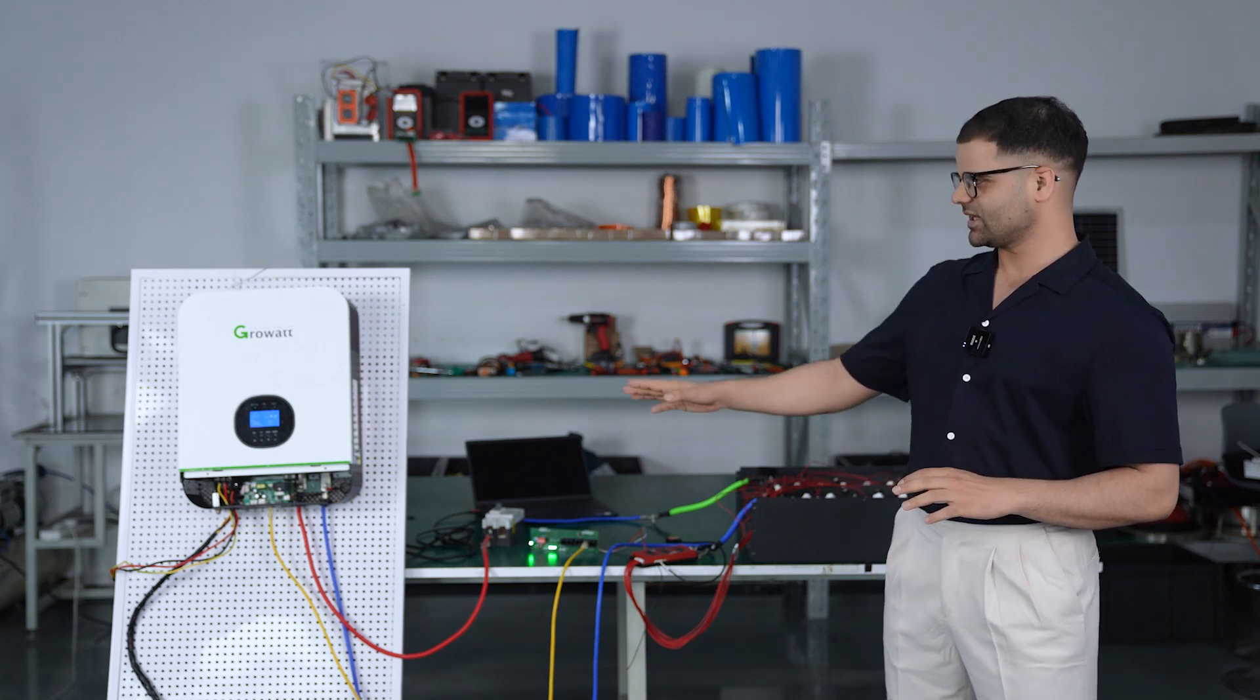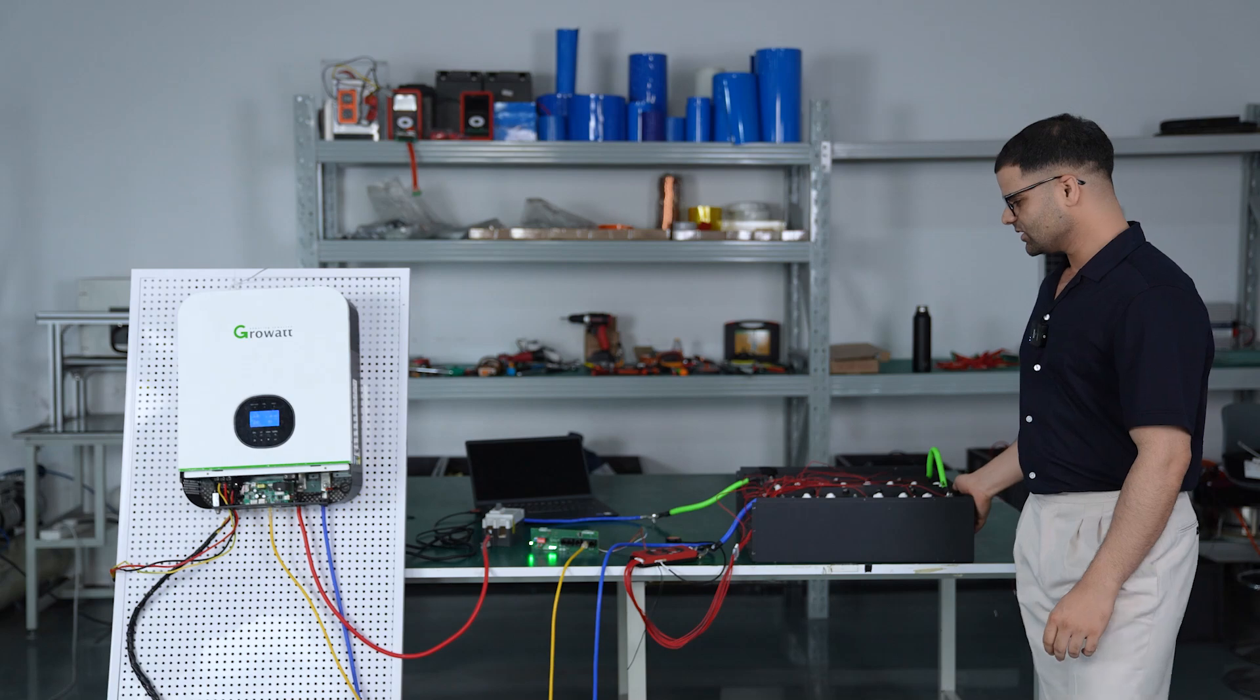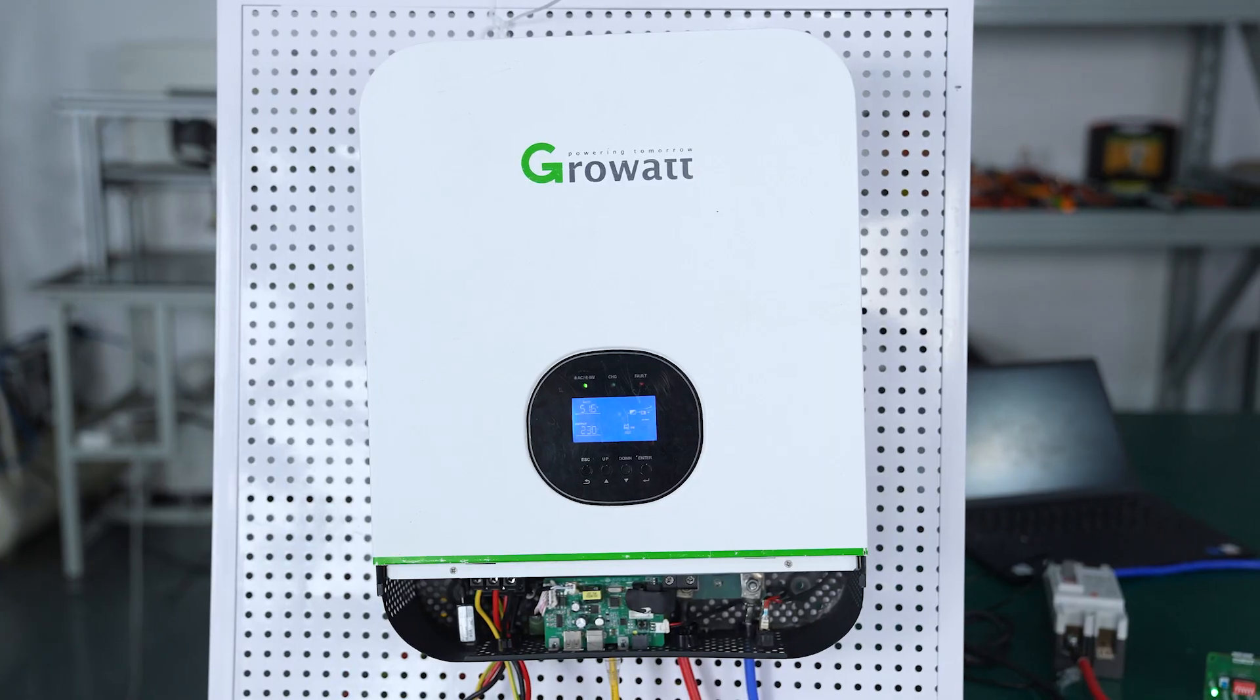Hello, today we are going to talk about how to connect the Growatt inverter. We have a 16S 48-volt battery connected to our 150-amp BMS and a Growatt inverter.